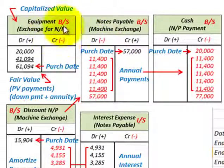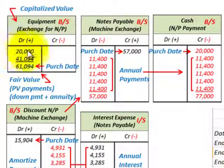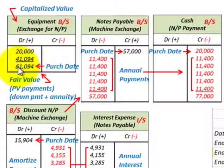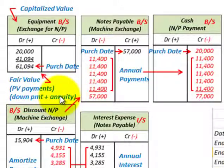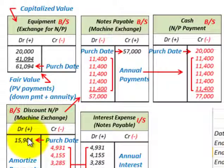Now let's look at how we record this in T-account form. The equipment account is capitalized at sixty-one thousand ninety-four dollars — that's the twenty thousand dollar down payment plus the forty-one thousand ninety-four dollar present value of the annuity payments — recorded at the purchase date. We also debit discount on notes payable for fifteen thousand nine hundred and four dollars.